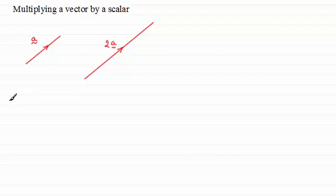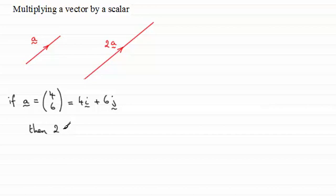So let's suppose that if the vector a had a column vector of the form 4, 6, 4 across, 6 up, it's not drawn to scale, but this would be the same as, say, 4i plus 6j, if we're working with the unit base vectors i and j. Then the vector 2a would be just to multiply this column vector or this vector by 2.